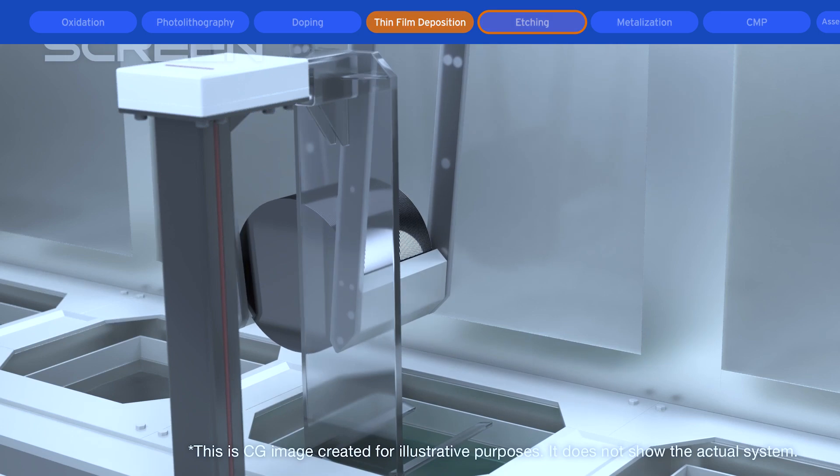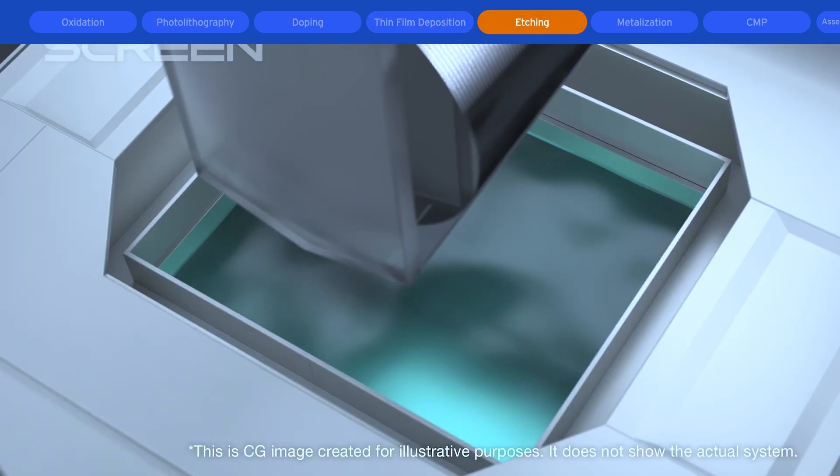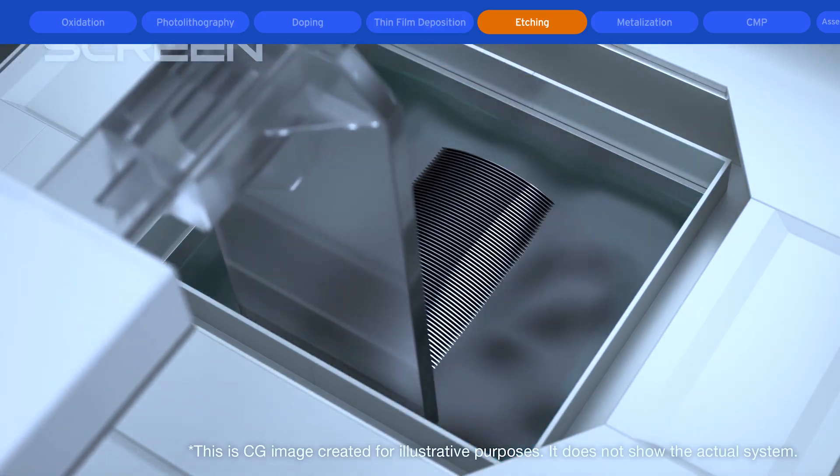Next, etching chemically removes specific areas of a deposited film in order to expose an underlying material or deposit another material.